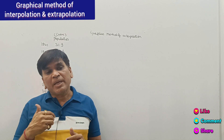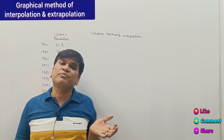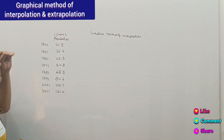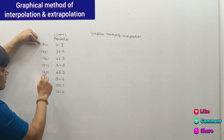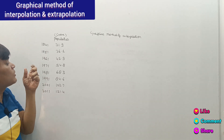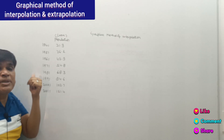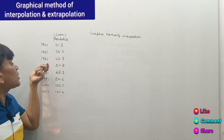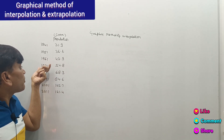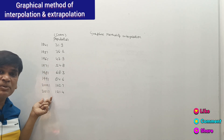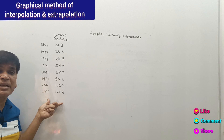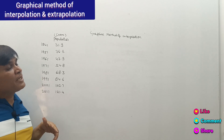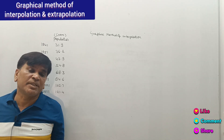But if we want to forecast data for the future, that is called extrapolation. For example, if the given series runs from 1941 to 2011 and we want to find the population in 1975, that is interpolation. But if we want to calculate the population for 2021 or project data for 2031, that is called extrapolation. We have many methods for calculating interpolation and extrapolation.